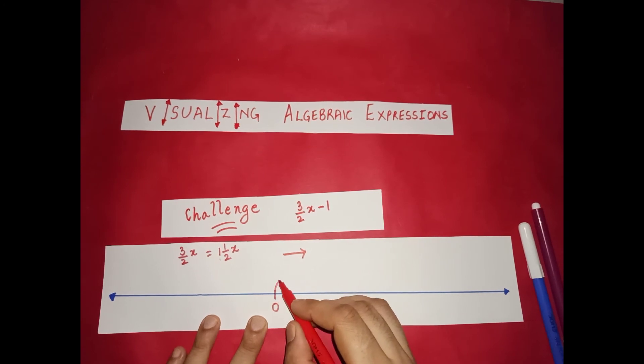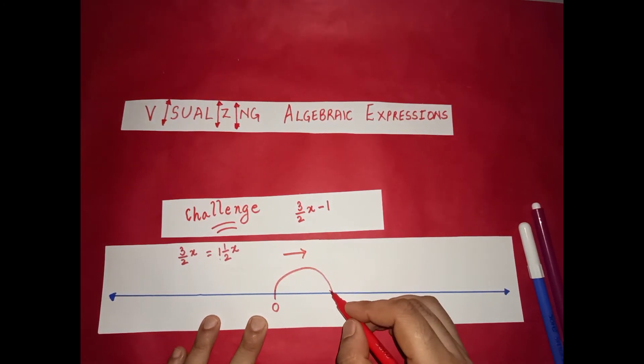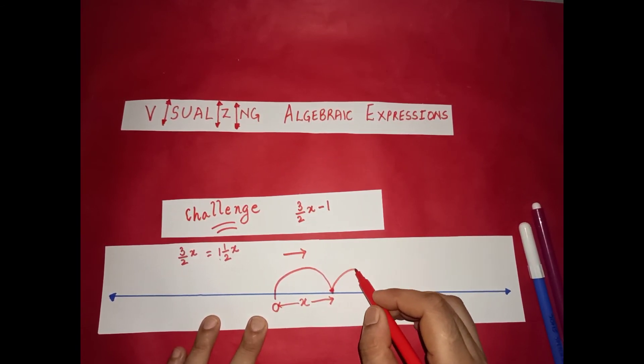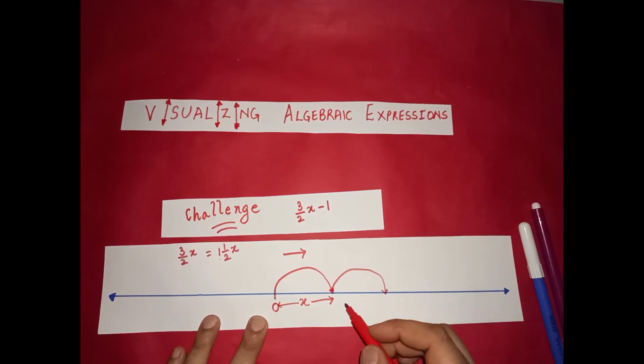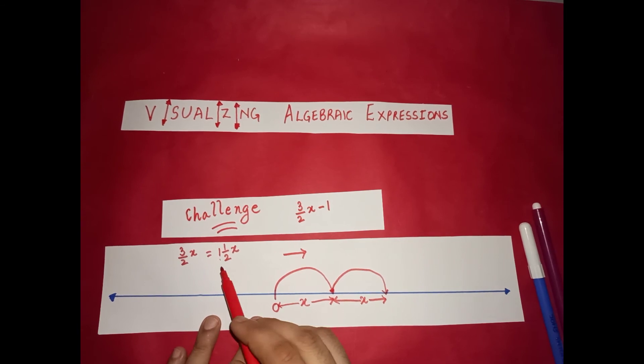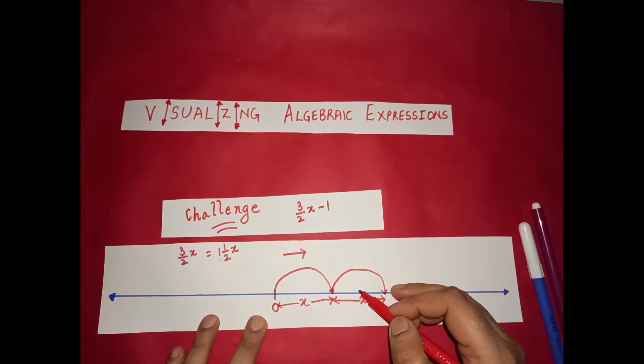So if this much is x. 1 half x. This is 1 x, 1 full x. I will make another x. This is 2 x. Do you agree this is 2 x? But what do we want? We want 1 x plus 1 half x. So let's approximately take half of this x. It comes out here.